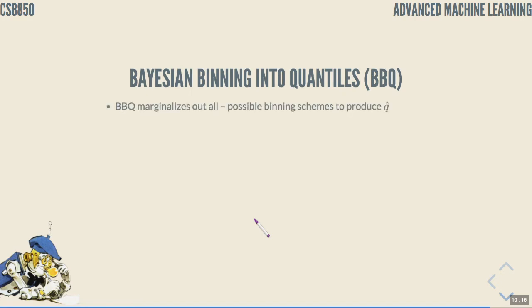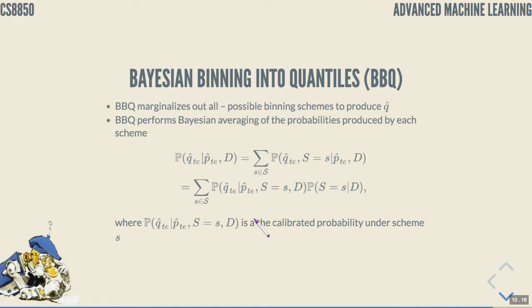In isotonic regression and histogram binning we choose one of the solutions. What Bayesian BBQ approach does is basically marginalize out all possible binning schemes. It's Bayesian averaging. We take the probability of returning a confidence given the confidence that the model returns and model it as an average over all possible binning schemas. If we can set prior on binning schemas and average out all of them, we would basically return the best overall possible queue.